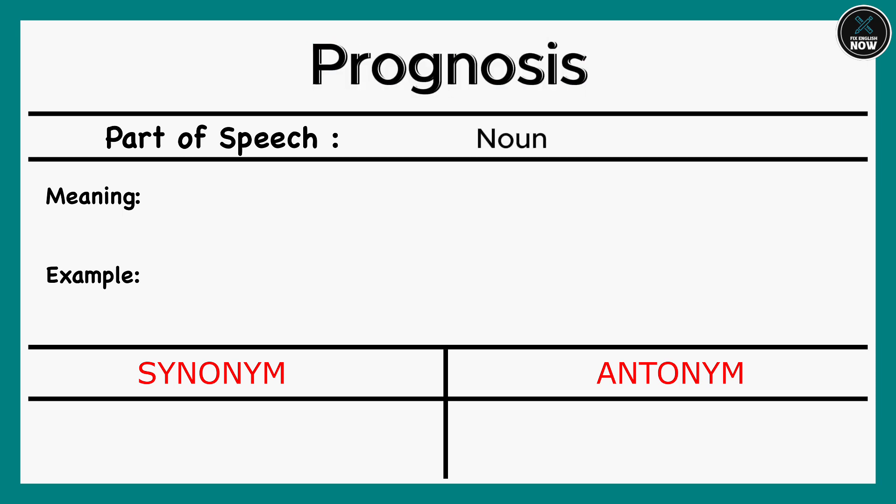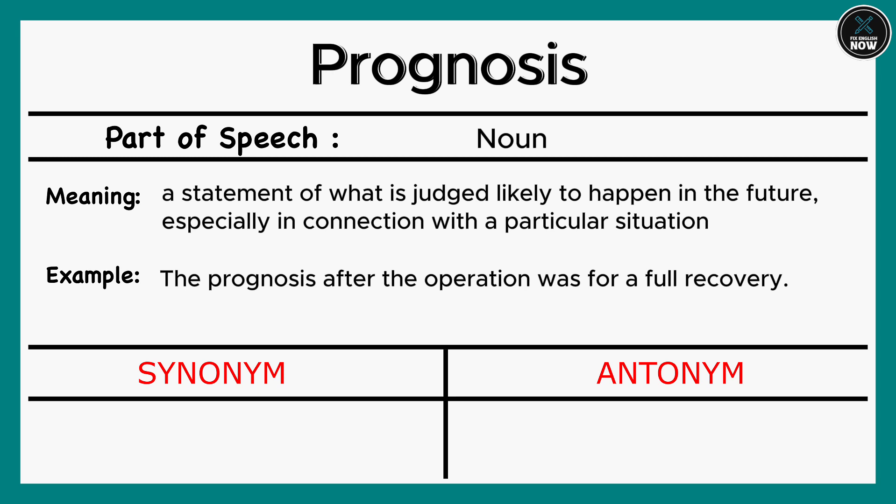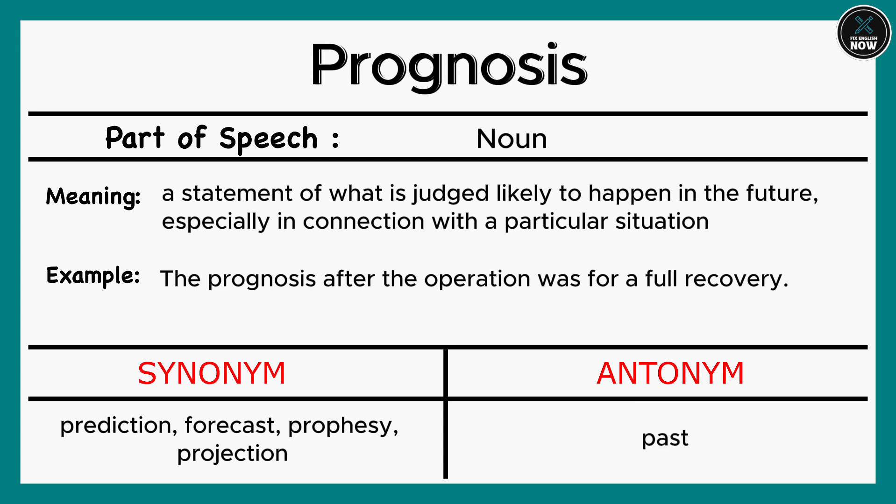Prognosis: A forecast of the likely outcome of a situation. Antonyms: Past.